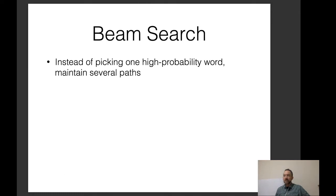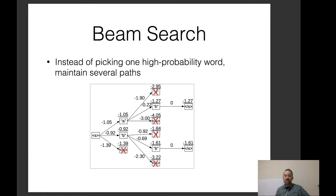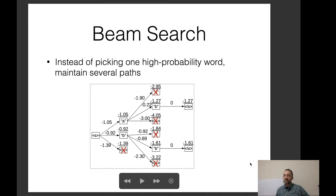Another option is beam search. Instead of picking one high-probability word, beam search maintains several paths. For example, at each time step we maintain two paths through the graph — in time step one we select either A or B; in time step two we have either AB or BB, whichever are the highest-scoring paths still on the beam. This is similar to greedy search except we use many outputs rather than one, and it's the industry standard for performing search in neural models.